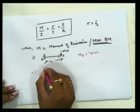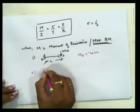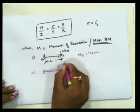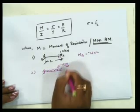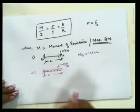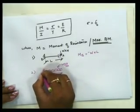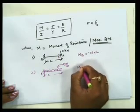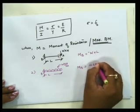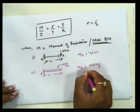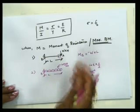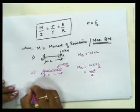Second case: a cantilever beam subjected to a uniformly distributed load w kilo-newtons per meter for a span of L meters. The maximum bending moment will again be at B, equal to w×L (point load) into distance L/2 because it acts at the center, giving M_max = wL²/2. These are standard formulas that should be on the tip of your tongue.